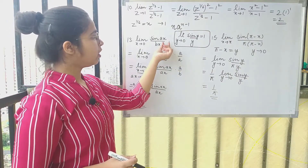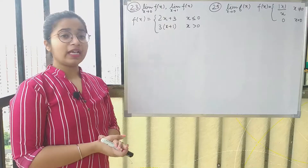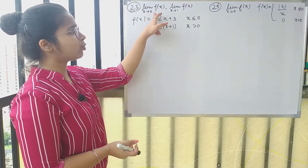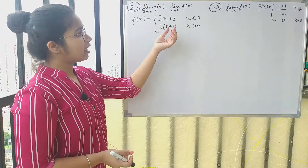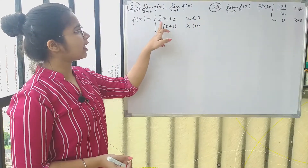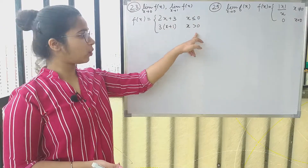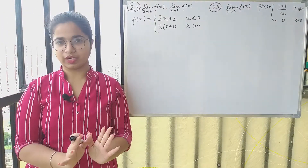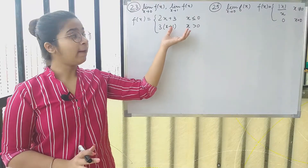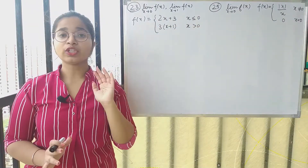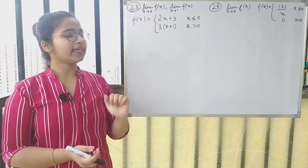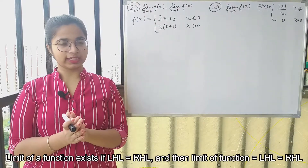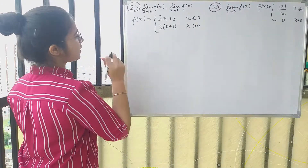When finding limits of trigonometric functions, make sure your angle matches the limit variable. Now, in question 23 we have to find the limit of a piecewise function as x tends to 0 and x tends to 1. The function is defined as 2x + 3 when x ≤ 0 and 3(x + 1) when x > 0. For piecewise functions we always find the left-hand limit and right-hand limit separately; if both are equal, that is the limit of the function.